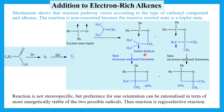Due to the two isomers, the reaction is not stereospecific. The preference of one orientation can be rationalized in terms of the initial attack on the alkene by the oxygen of the excited carbonyl group to give a biradical intermediate. The more energetically stable of the two possible radicals is formed more readily; thus the reaction is regioselective. Biradical stability is certainly applicable to the prediction of the major product in cycloaddition reactions.